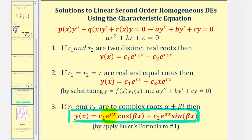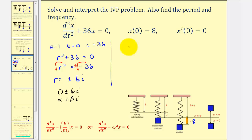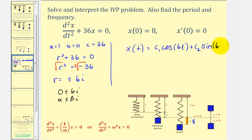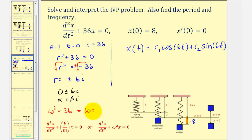Therefore, the general solution is X of t equals C sub one cosine 6t plus C sub two sine 6t. Since alpha equals zero, the e to the zero terms equal one and drop out. Notice also that omega squared equals 36, so omega equals 6, which is why you sometimes see the solution written as C sub one cosine omega t plus C sub two sine omega t. This connects directly to solving linear second-order homogeneous equations with constant coefficients.